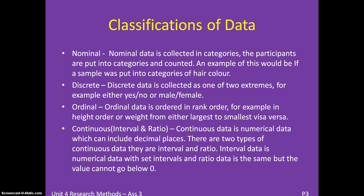The two types of continuous data are Interval and Ratio. Interval data is numerical with set intervals, and Ratio is the same but the value cannot go below zero — for example, height, as you can't have a negative height. With interval data, it could be something like a scoring system that can go below zero, such as if you get negative points for doing things wrong — that would be interval data.